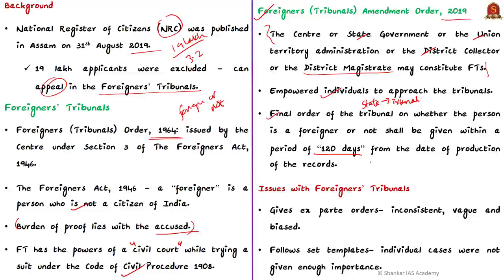Now we discuss the issues surrounding these tribunals. The authors analyzed more than 800 orders passed by foreigners tribunals during 2017 to 2019. According to them, 96% of the orders were given ex parte, meaning the judgment was made without the presence of the parties to the dispute — the affected people were not present while the judgment was being delivered. The orders were also found to be inconsistent, vague, and biased.